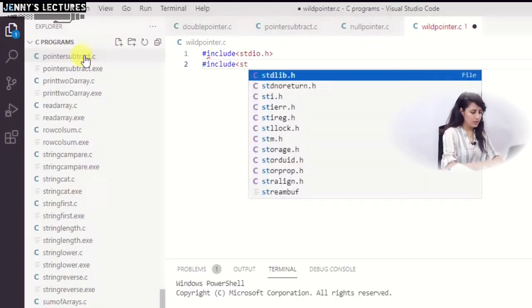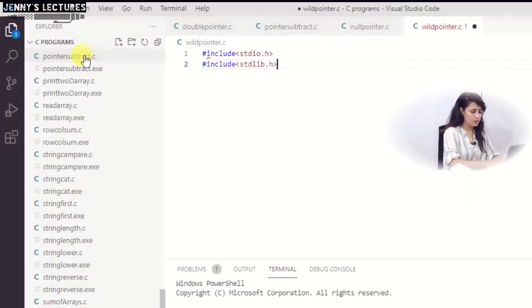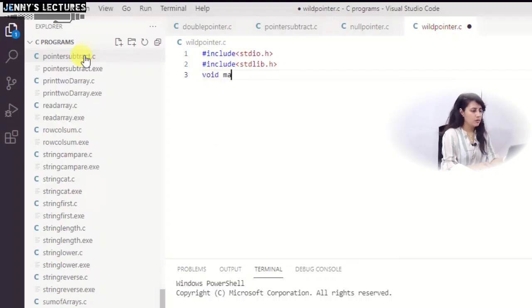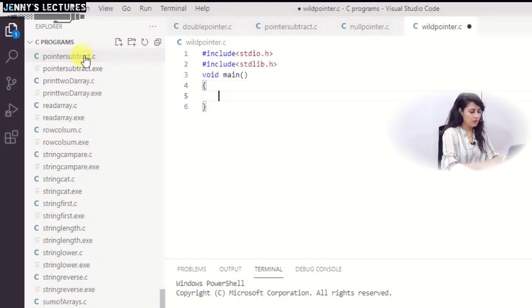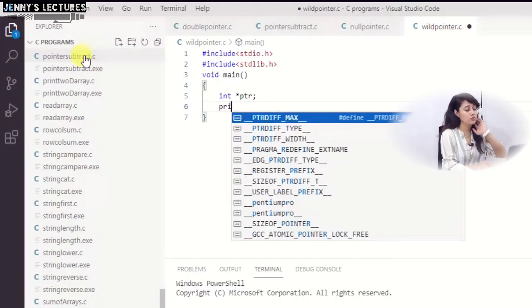We will use that header file also stdlib, maybe we can use that malloc function here. And now in main function, I am going to take one pointer like int star PTR. I am not going to assign it, not going to initialize it.